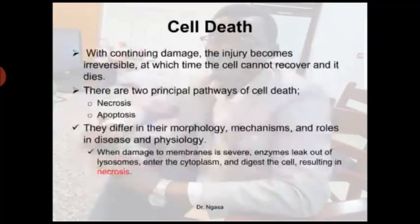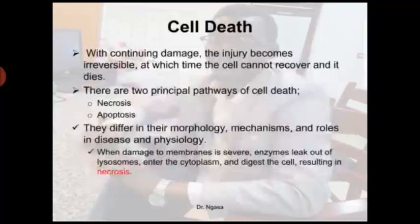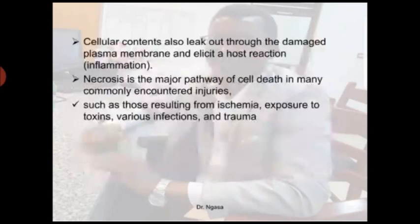The last sub-objective is cell death itself. As seen in previous slides, cell injury occurs through stages — a reversible stage and eventually an irreversible stage. With continuing damage, the injury becomes irreversible, at which point the cell cannot recover and it tends to die. There are two principal pathways of cell death: necrosis and apoptosis. These two differ in their morphology, mechanism, and roles in disease and physiology. When membrane damage is severe, enzymes leak out of lysosomes into the cytoplasm and digest the cell, resulting in necrosis.